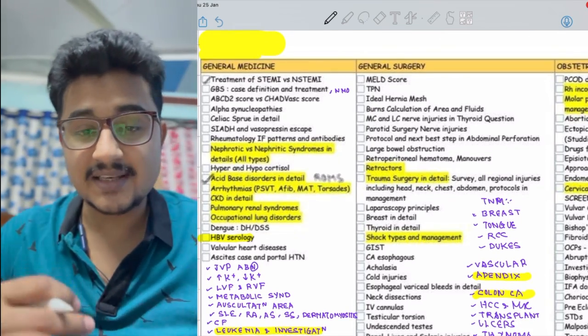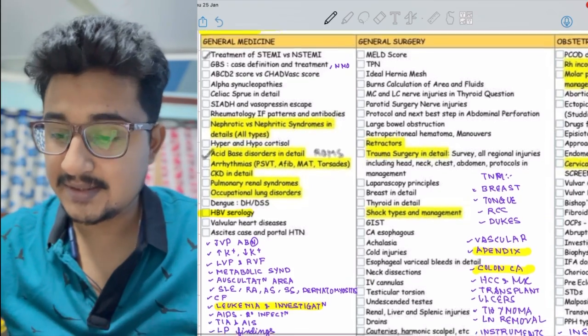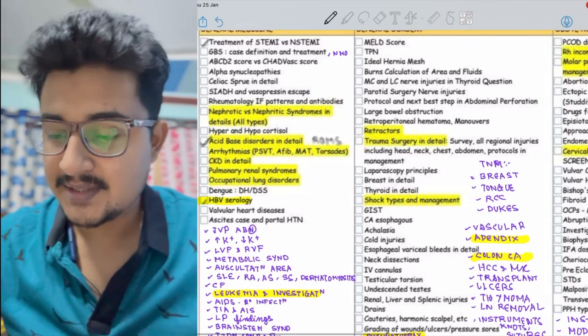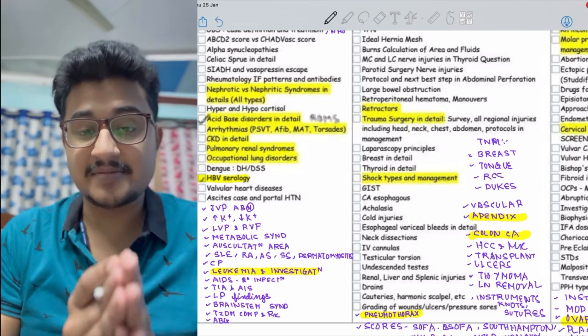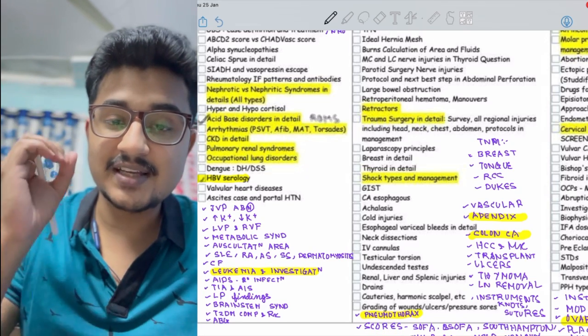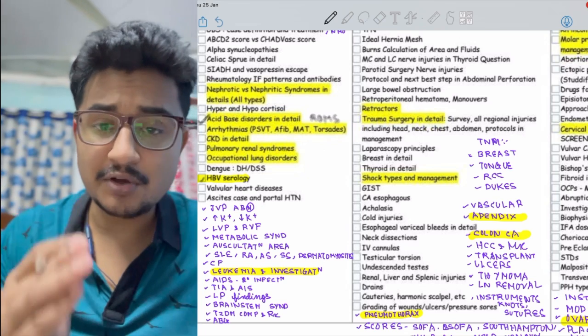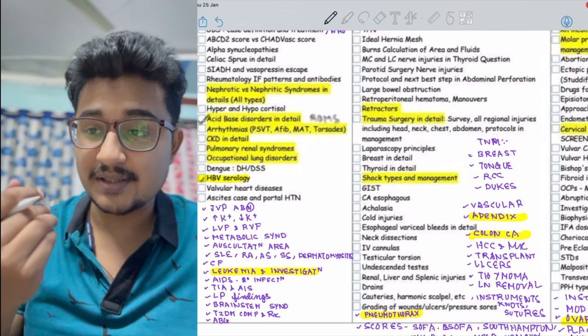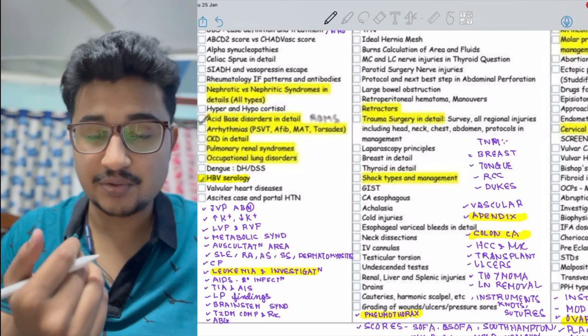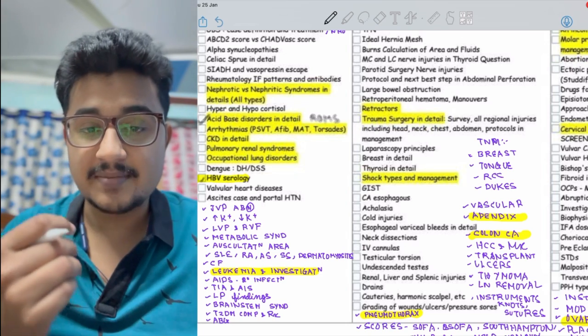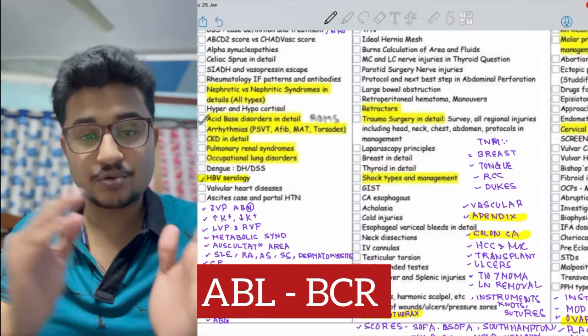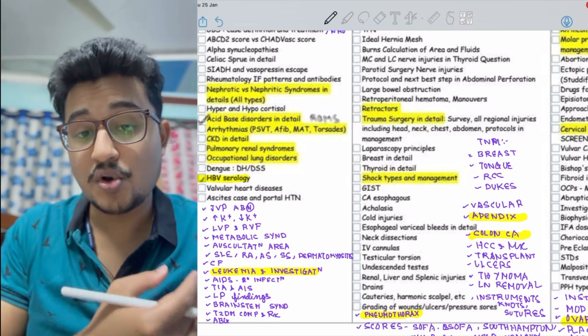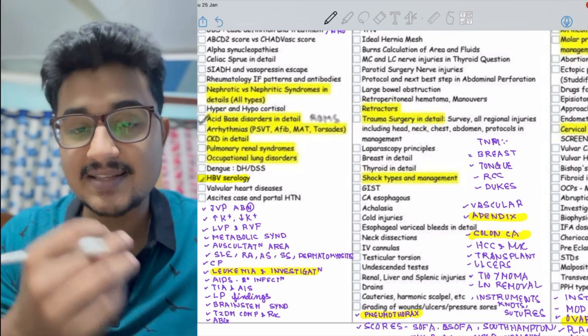In arrhythmias they give the ECG and tell you to diagnose. Then CKD, pulmonary syndromes, occupational lung disorders, HBV serology is too important. Leukemia and investigation - the patient is having these symptoms, this blood picture, what investigation do you want to do? If it's CML you have to say you're going to do the karyotyping or FISH because BCR-ABL mutation is there.